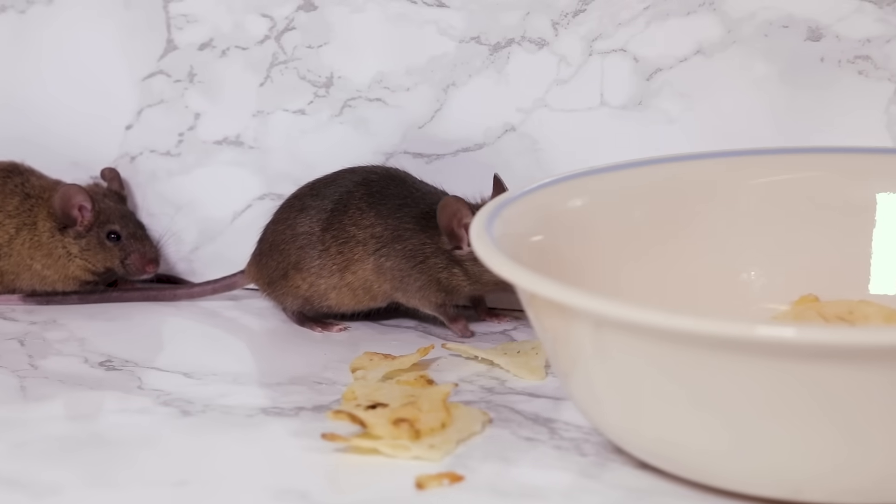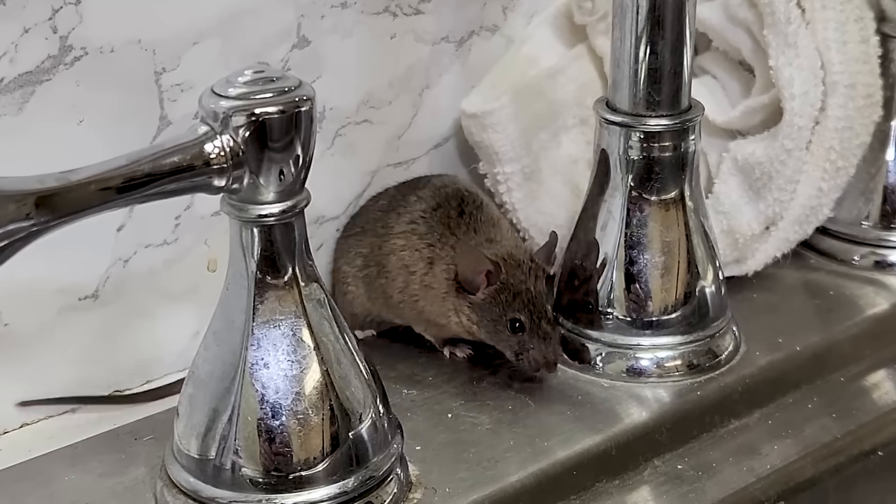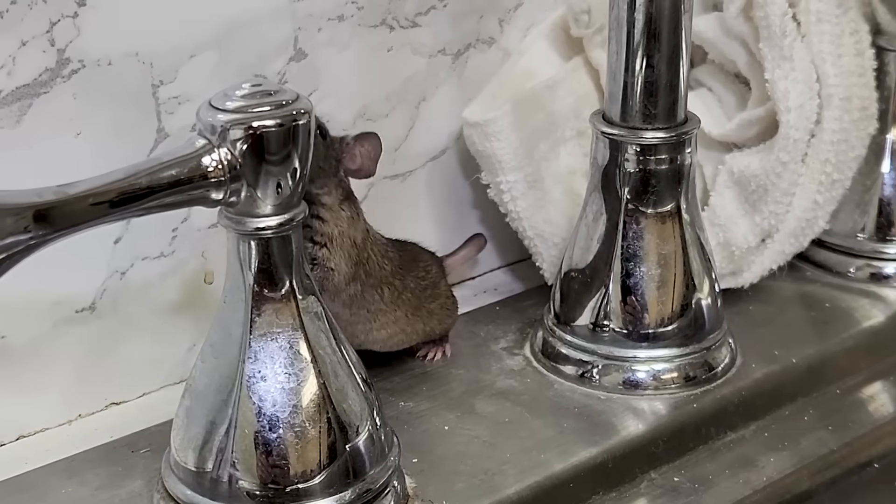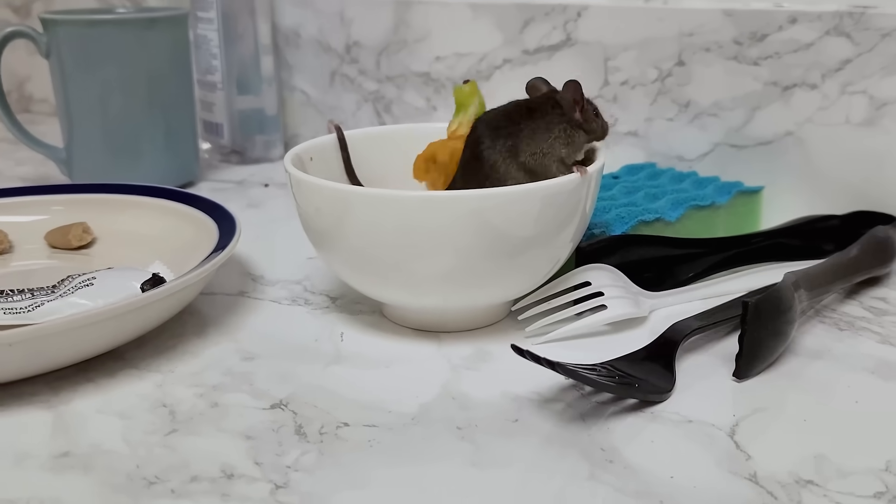Foodborne illnesses are spread by pests as they pick up germs while crawling across sewage, garbage, decaying matter, and other filth, and then transfer these germs, along with their shed skins and fecal droppings, onto foods and other surfaces.